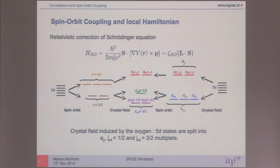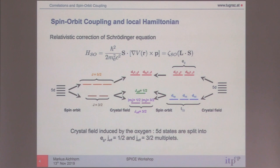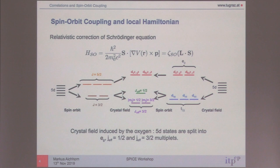I will skip the standard iridate story since you've already heard it. This is the sketch of the orbital levels we deal with in 5D transition metal oxides. I want to concentrate on the T2G subset. The EG states are not really affected by spin-orbit coupling — the diagonal terms in these orbitals are zero. There is hybridization through spin-orbit coupling between the two subsets, but neglecting this is a good approximation when the splitting is large — a couple of eV. The splitting within the T2G between the J3/2 and J1/2 subsets is given by the spin-orbit coupling.